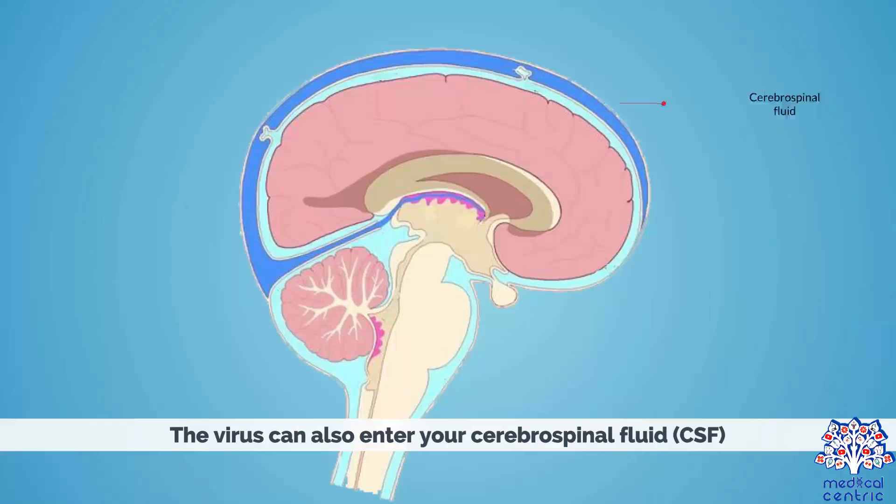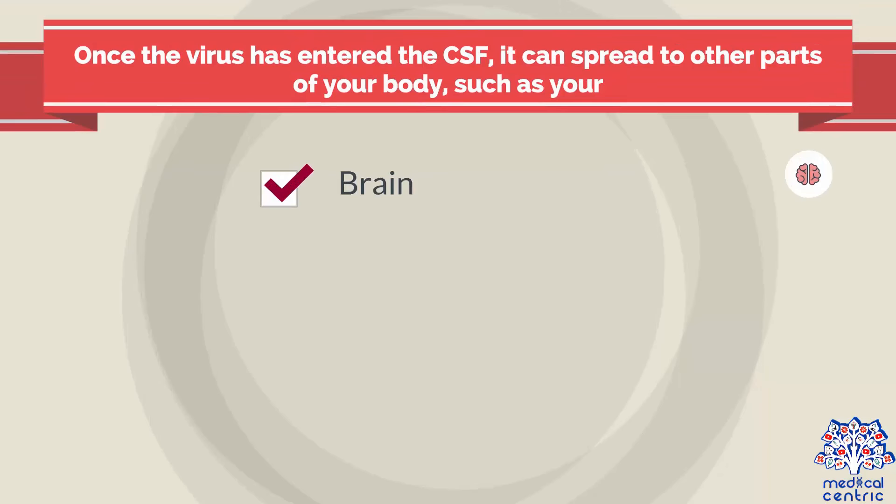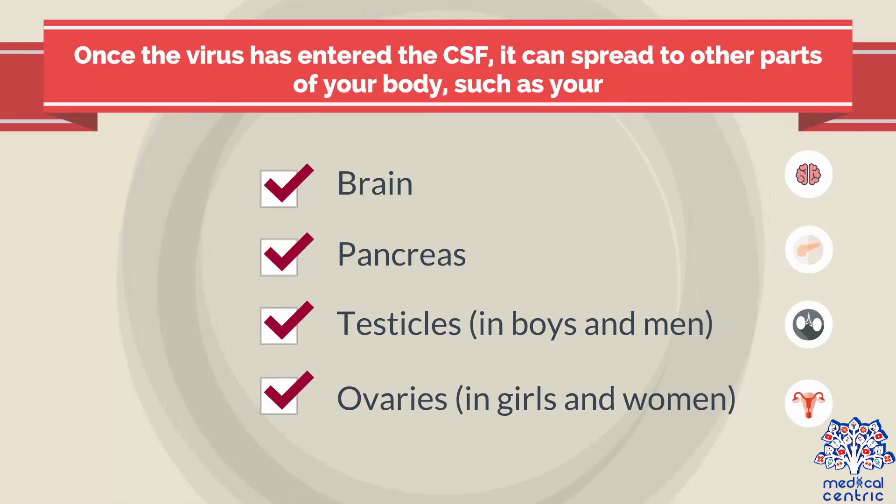The virus can also enter your cerebrospinal fluid, or CSF, which is the fluid that surrounds and protects your brain and spine. Once the virus has entered the CSF, it can spread to other parts of your body, such as your brain, pancreas, testicles in boys and men, and ovaries in girls and women.